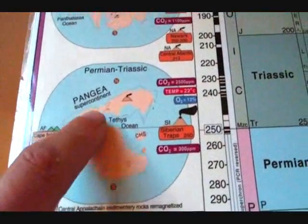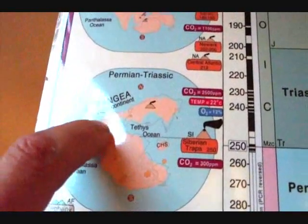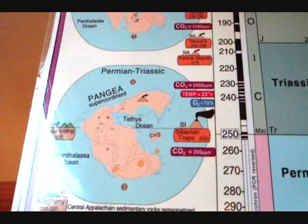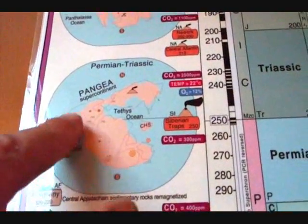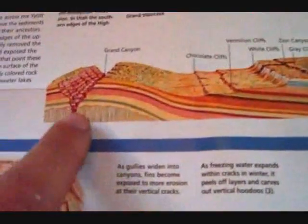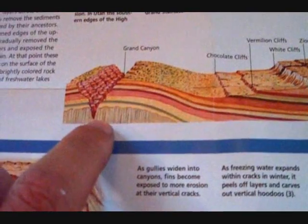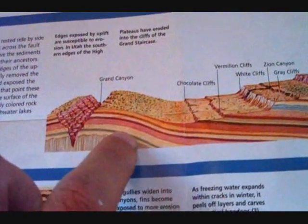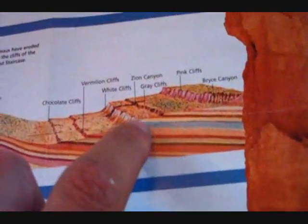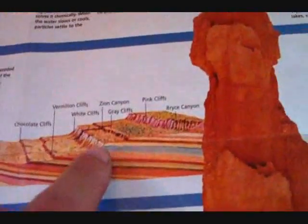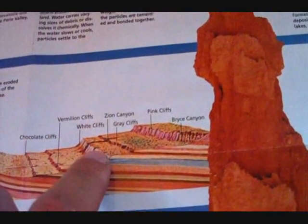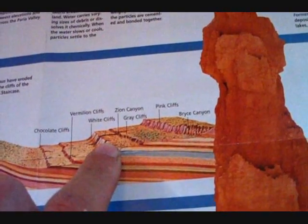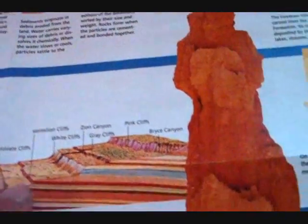Later, America rises above sea level and the Appalachian Mountains form. This whole region on the backside of America becomes a vast desert, giving you huge sand dunes — which is actually part of Zion. About 50% of those sand dunes is composed of material that came from the Appalachian Mountains.